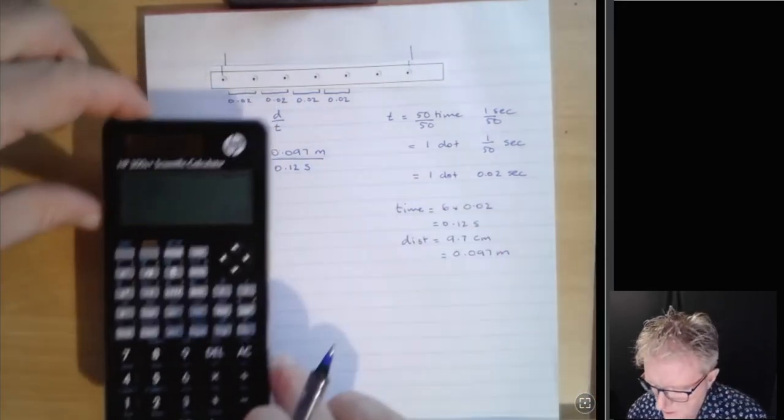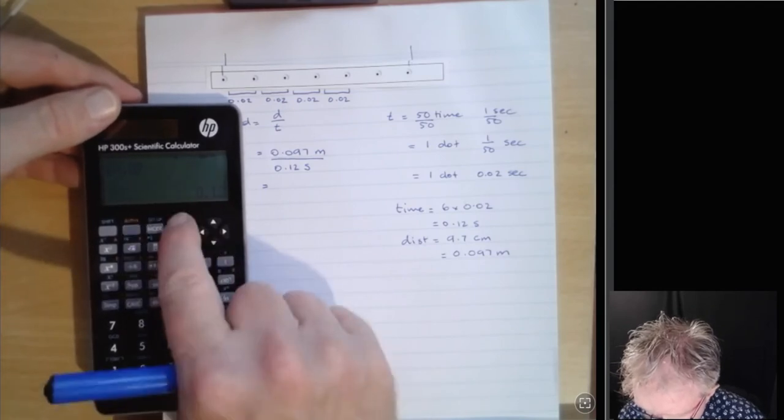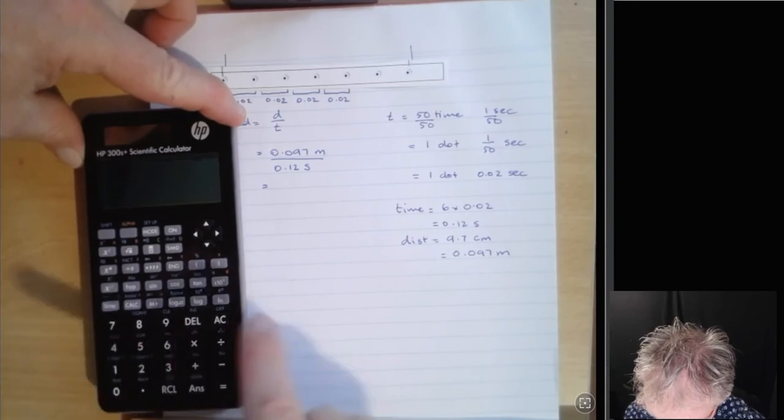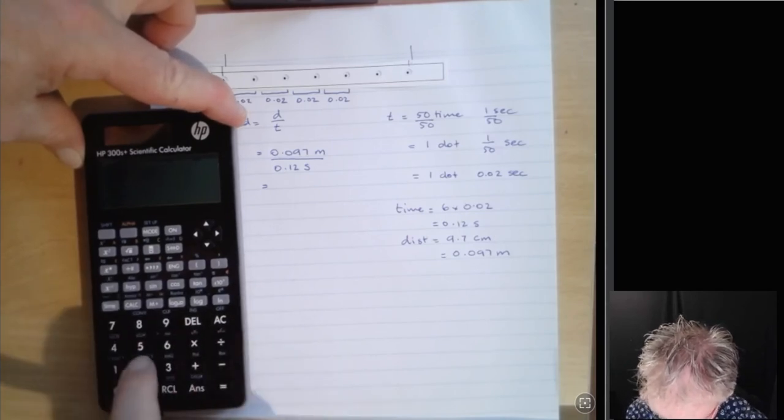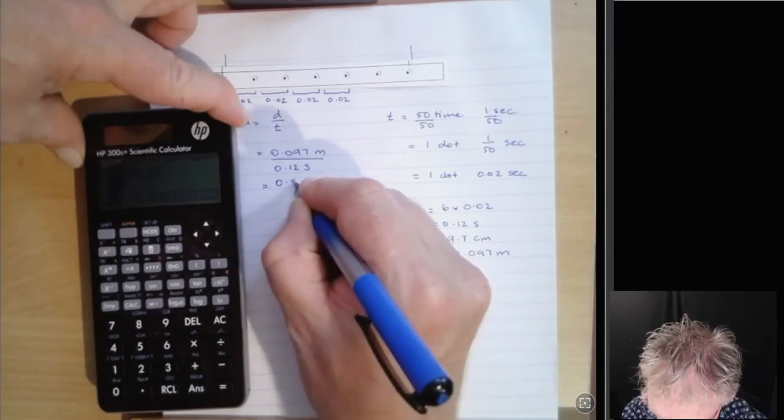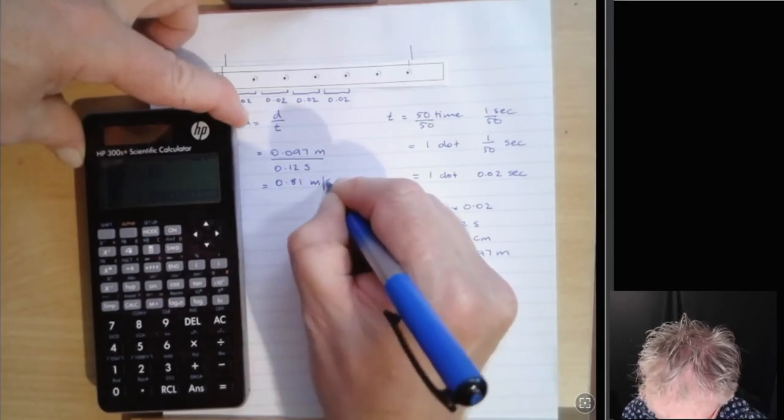And so now if we put this on the calculator, right, we've got 0.097 divided by 0.12 equals, and that's saying the speed that we have is 0.81 meters per second.